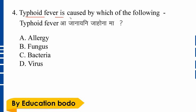Question number four: Typhoid fever is caused by which of the following? Option C is the right answer — Bacteria. Typhoid fever is caused by bacteria.